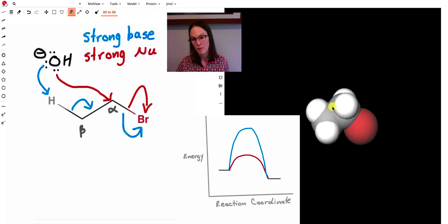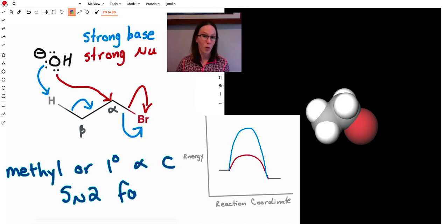So breaking one sigma bond, forming a pi bond, then breaking, so essentially breaking two sigma bonds. All right, so when that alpha carbon is primary or methyl, the SN2 reaction is favored.